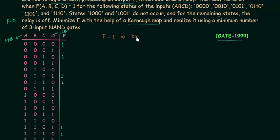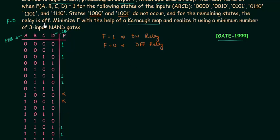When F is equal to 1 this will turn on the relay, and when F is equal to 0 this will turn off the relay. States 1,0,0,0 and 1,0,0,1 are the don't cares, so I will put a cross mark in front of these two states. For all the remaining states the relay is off, meaning F is equal to 0.